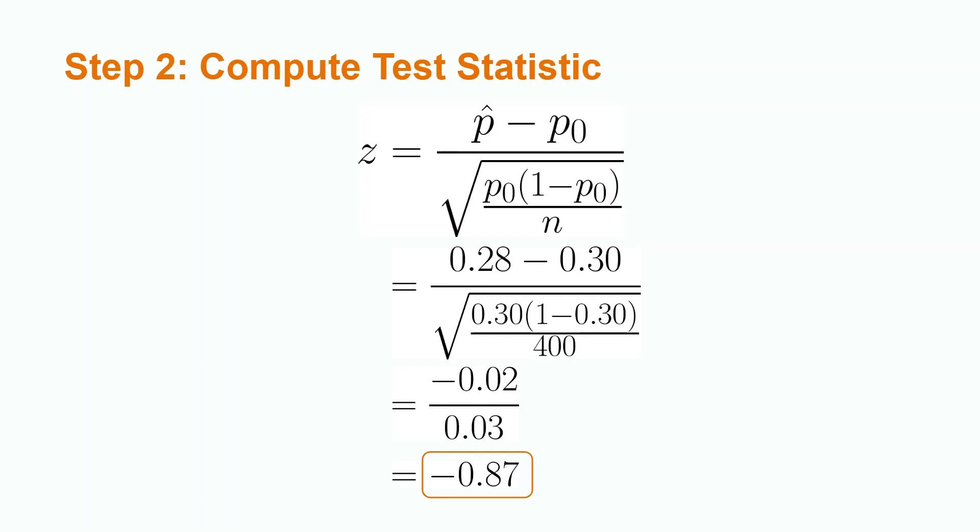A z-test statistic measures the difference between our sample proportion, p̂, and our hypothesized proportion, p₀. We compute these values by subtracting p₀ from p̂ and then dividing by the square root of p₀ times one minus p₀ divided by n.